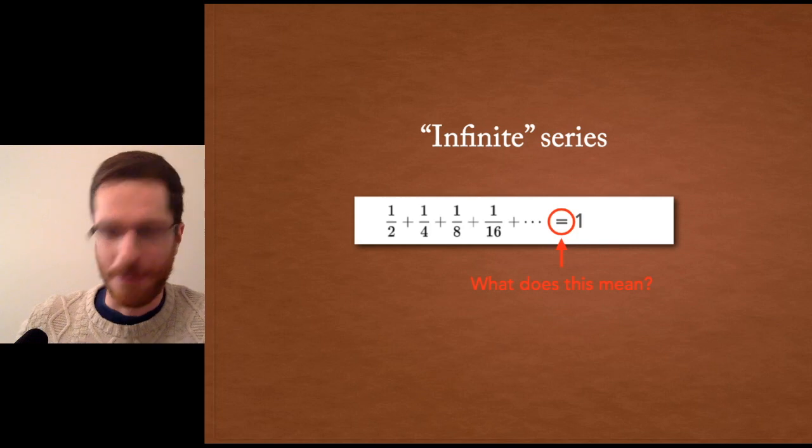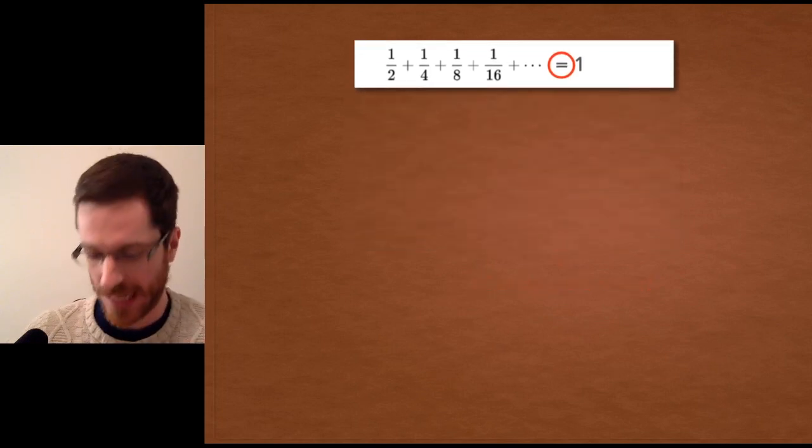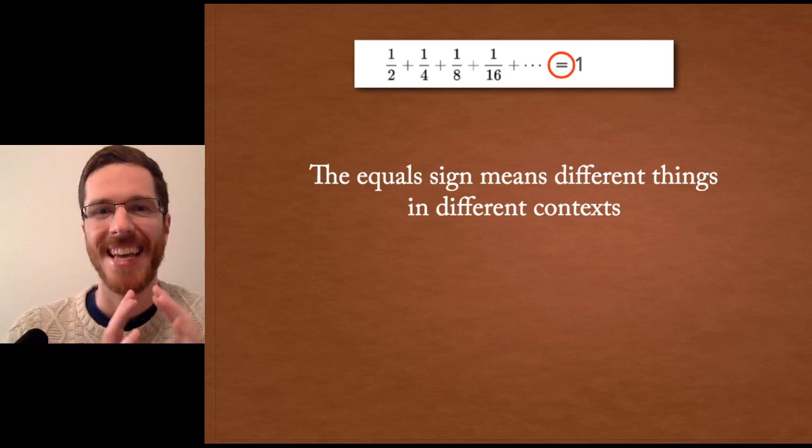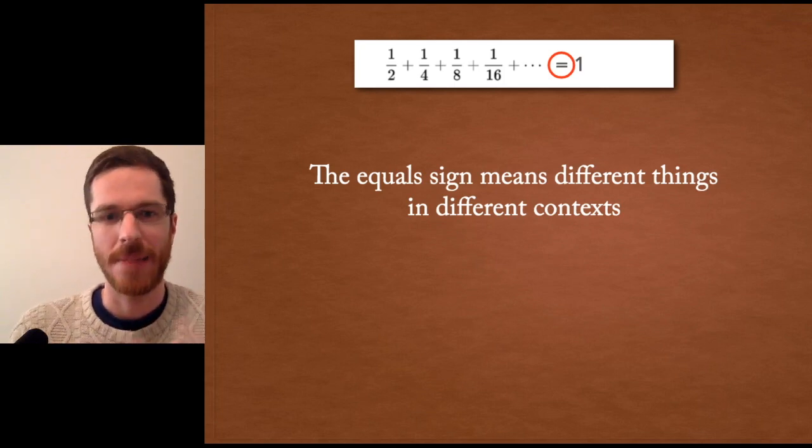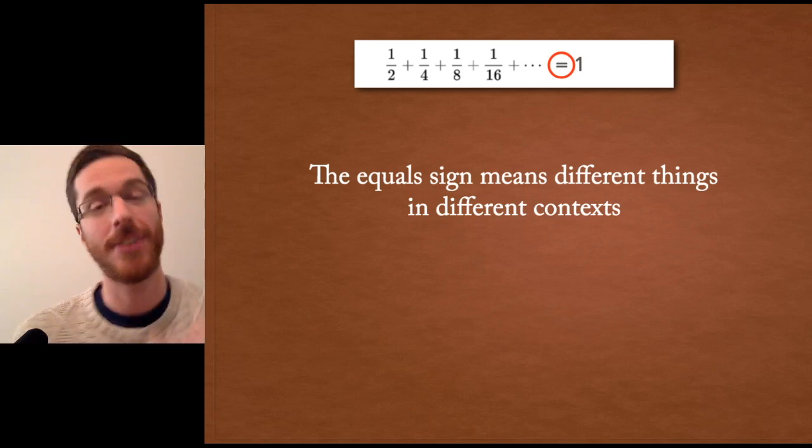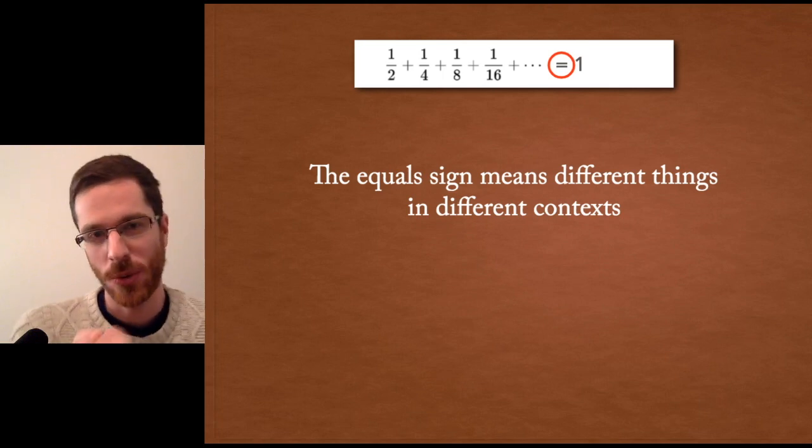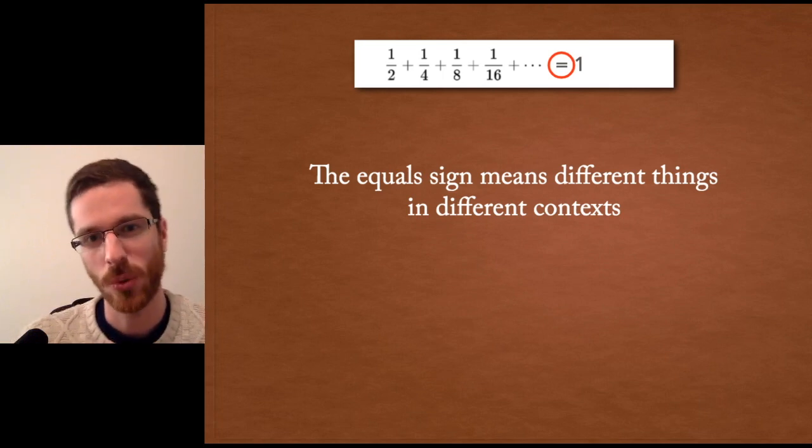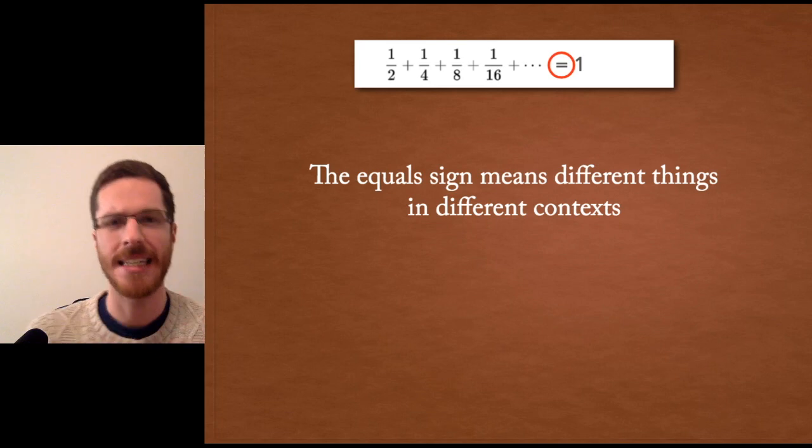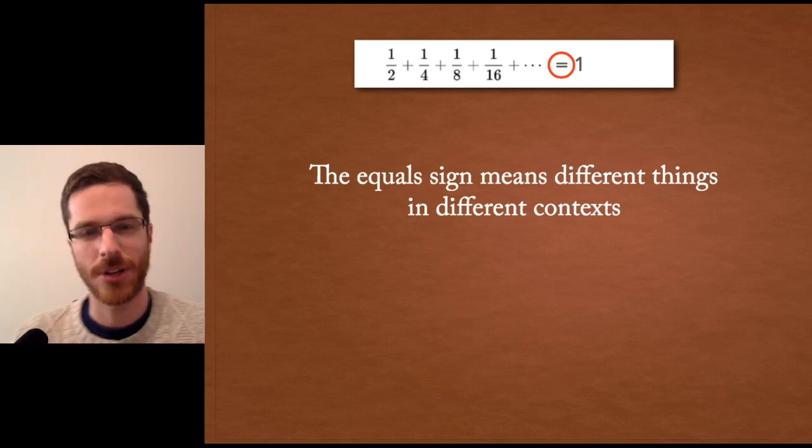Critically important, this is not something unique to me, but everybody needs to understand this. The equal sign in mathematics is a symbol that means different things in different contexts. So it doesn't always mean equals as in one plus one equals two.